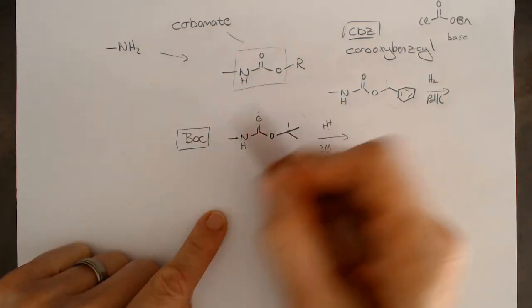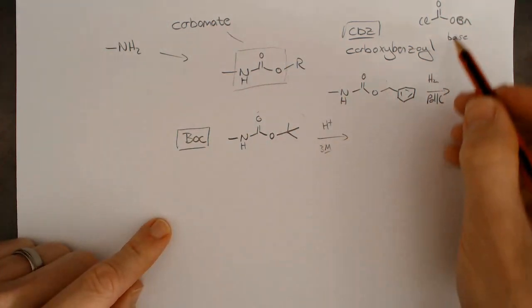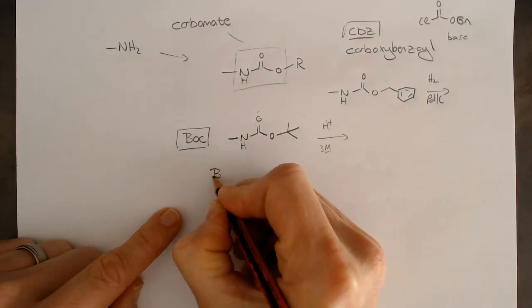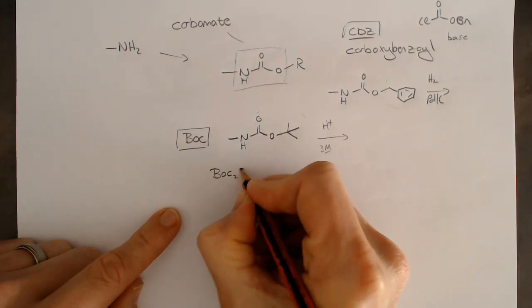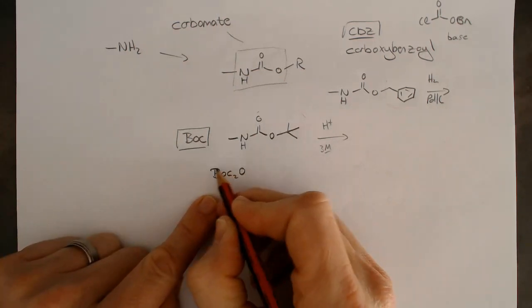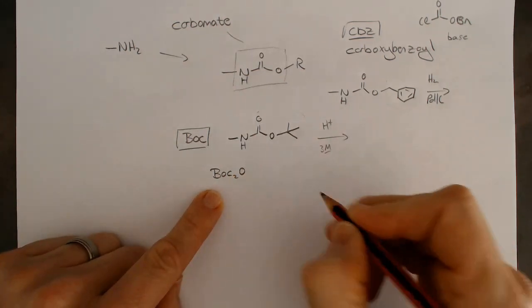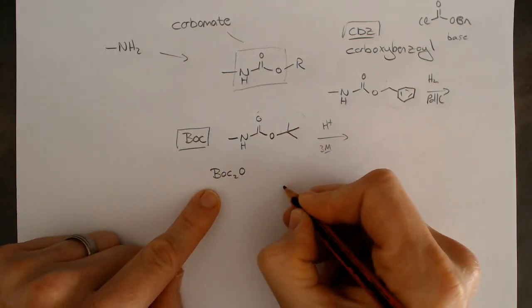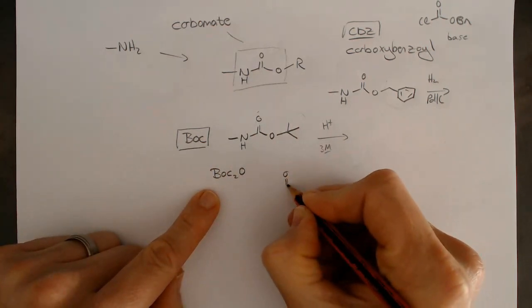We've got complementary groups here. Last thing to mention, how do we put BOC on? We use BOC anhydride, which is BOC2O. If you know what BOC is, it's actually quite a wasteful reagent because it's two BOC groups, and of course only one of them goes on.